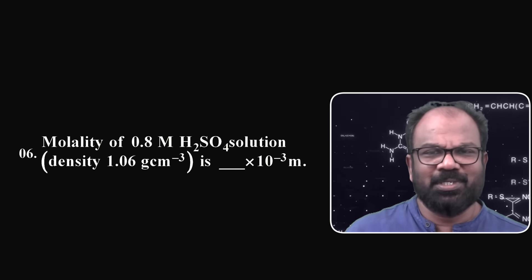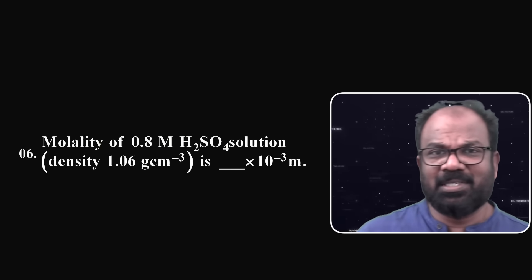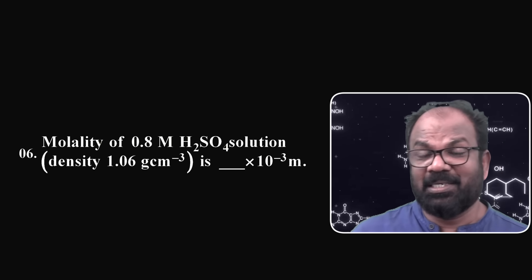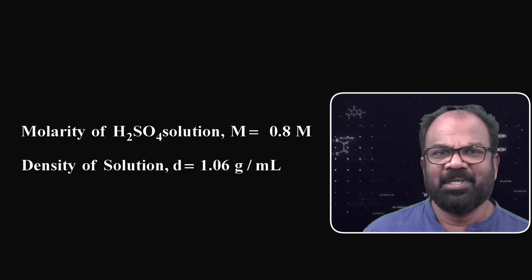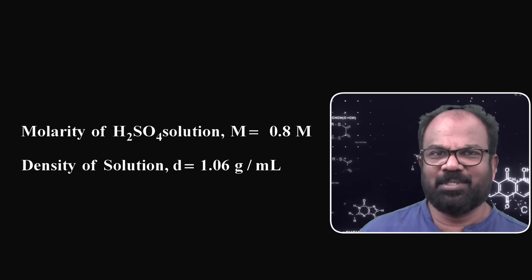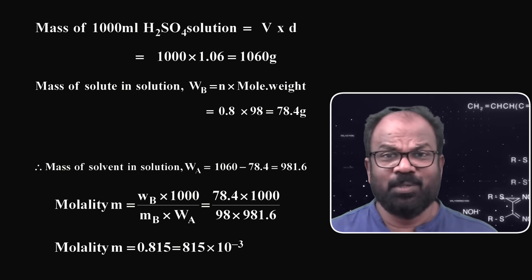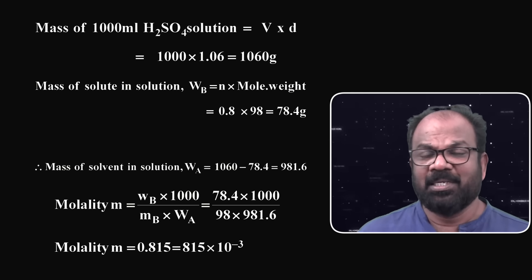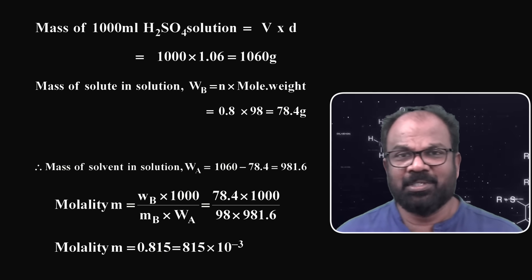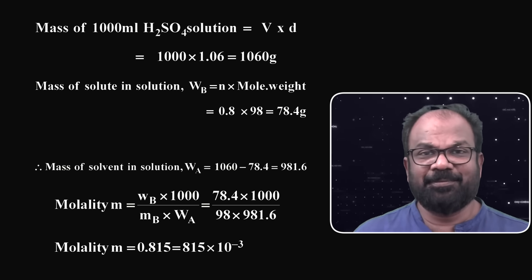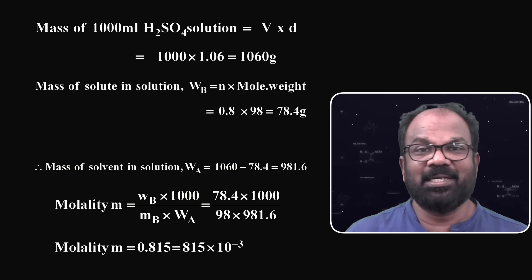Question number 6. Molality of 0.8 molar sulfuric acid solution (density = 1.06 g/cc) is ___ × 10⁻³ m. This question is similar to question number 5 — molarity and density are given; calculate molality. The molarity of H₂SO₄ is 0.8 molar, density d = 1.06 g/ml. Using d = M × (1/m + molecular mass of solute / 1000), where molecular mass of H₂SO₄ is 98, substituting the values, the molality of the solution is found to be 815 × 10⁻³. So the answer is 815.